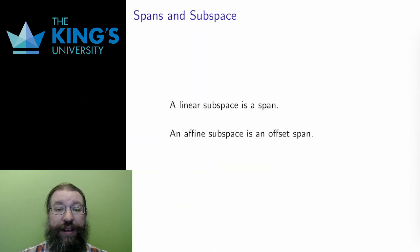Alright, now let me connect the two ideas of this and the previous video. Perhaps you've already guessed, but these linear and affine subspaces are nothing more than the geometric interpretation of the previous spans and offset spans. A linear subspace is a span, and a span is a linear subspace. An affine subspace is an offset span, and an offset span is an affine subspace.